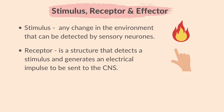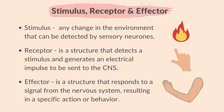A receptor is a structure that can detect a stimulus. It generates an electrical impulse when it detects a stimulus, which is then sent to the central nervous system. In this example, the receptors are in the skin of the hand. An effector is a structure, often a muscle or a gland, that responds to a signal from the nervous system resulting in a specific action or behaviour. In this case, the effector will be the muscles of the arm, which will carry out the response by pulling the arm away from the fire.